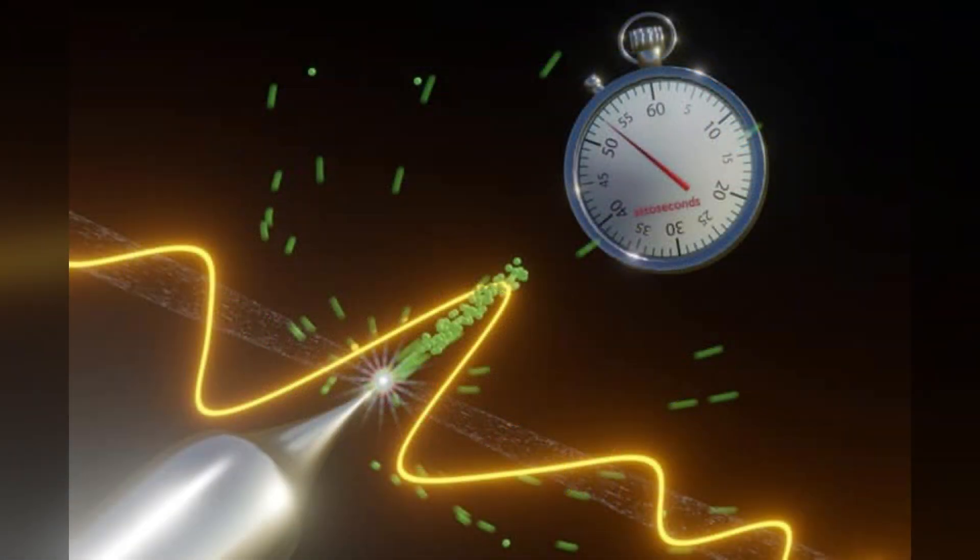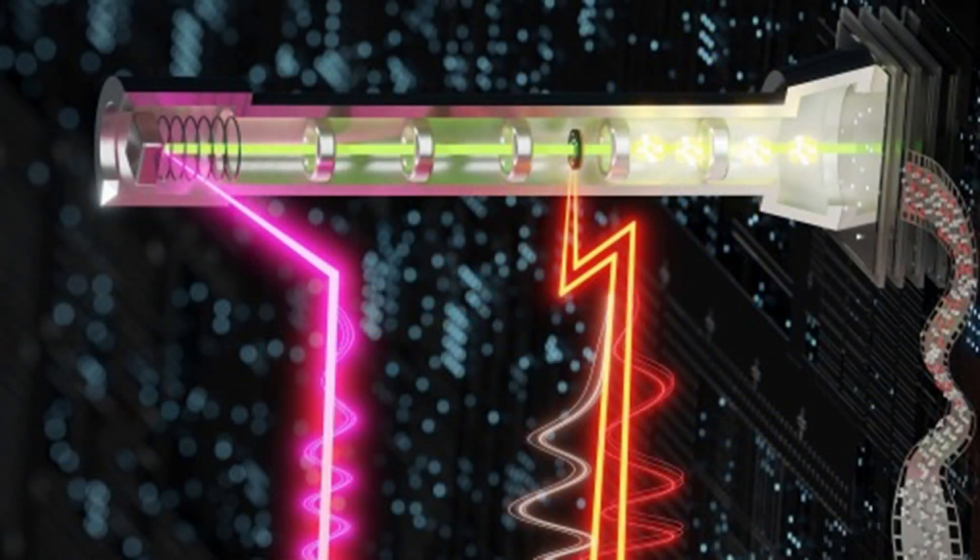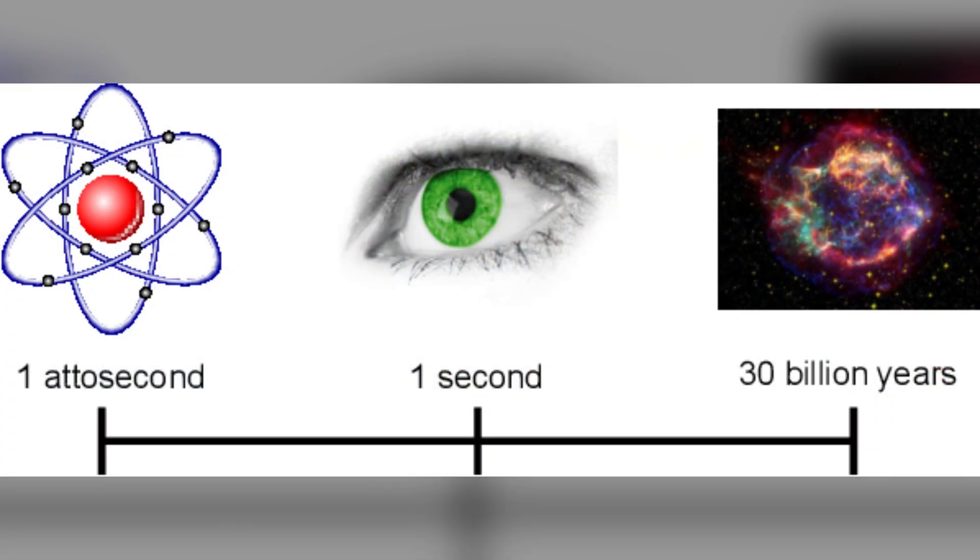Previous ultrafast electron microscopes use laser pulses to emit electrons at speeds of a few attoseconds, creating a series of images like frames in a movie. However, this still left gaps in capturing the full range of electron dynamics. The ATTO microscope changes this by using a single attosecond electron pulse, effectively freezing the motion of electrons and providing a clear view of their interactions.